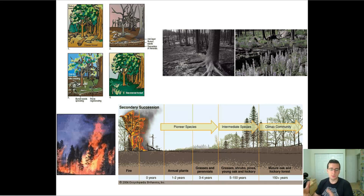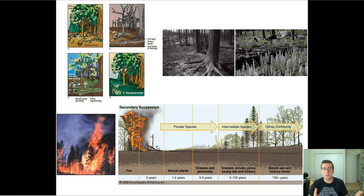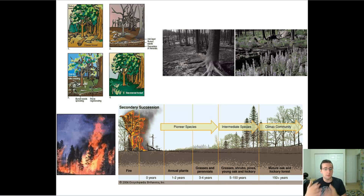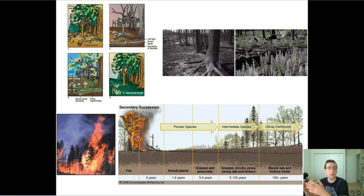There's still soil. There's still nutrients. But you're going to have to go through the same kind of process where you're going to start with the pioneer species, and you're going to get the annual plants, and then you're going to get grasses and perennial plants. Then you're going to get shrubs and larger trees, and then before you know it, you go back to the climax community.